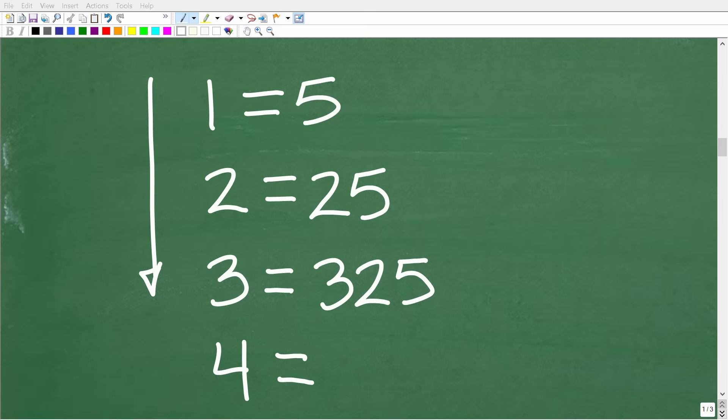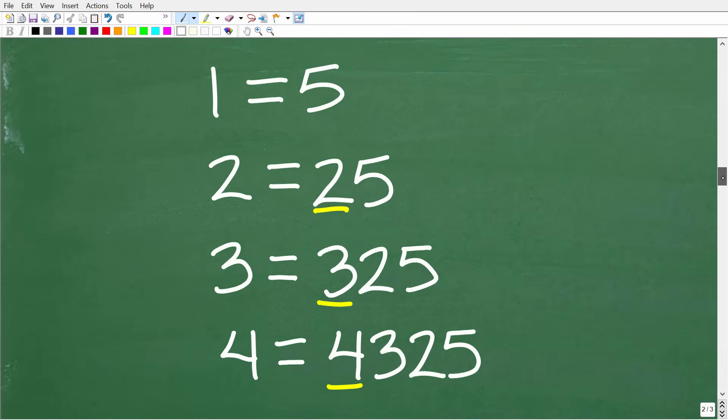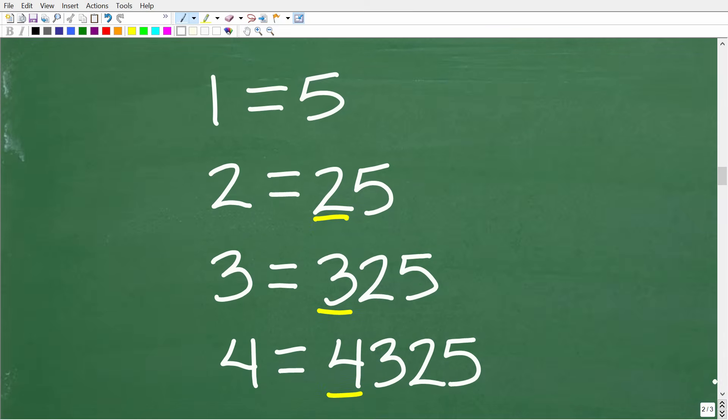All right, so as I indicated, what we're talking about here is logic. So don't get too caught up in mathematics, per se. Try to look for a pattern. Okay, so 1 is equal to 5, 2 is equal to 25, 3 is equal to 325. What is 4 equal to? Because if we can figure out what 4 is equal to, then of course we know the pattern, and we can figure out what 5 is equal to. Okay, so let's go ahead and answer that question right now.